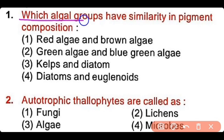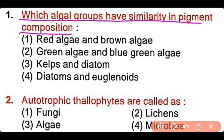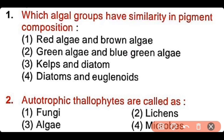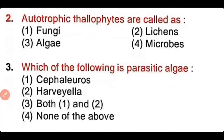Question number 1: Which algal group has similarity in pigment composition? Options: red algae and brown algae, green algae and blue-green algae, kelps and diatoms, or diatoms and euglenoids? The answer is option 3. Kelps and diatoms have similarity in pigments because both have fucoxanthin as well as carotenoids, and both are types of brown algae.